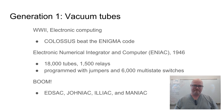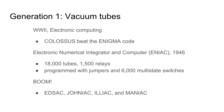That takes us to the first generation of modern electronic computers, based primarily on vacuum tubes — tubes within which a vacuum could be created or relieved via an electronic stimulus. In World War II, vacuum tube-based computers like the Colossus helped break the Enigma code. An important computer introduced in 1946 called the ENIAC had 18,000 tubes and about 1,500 electromagnetic relays.